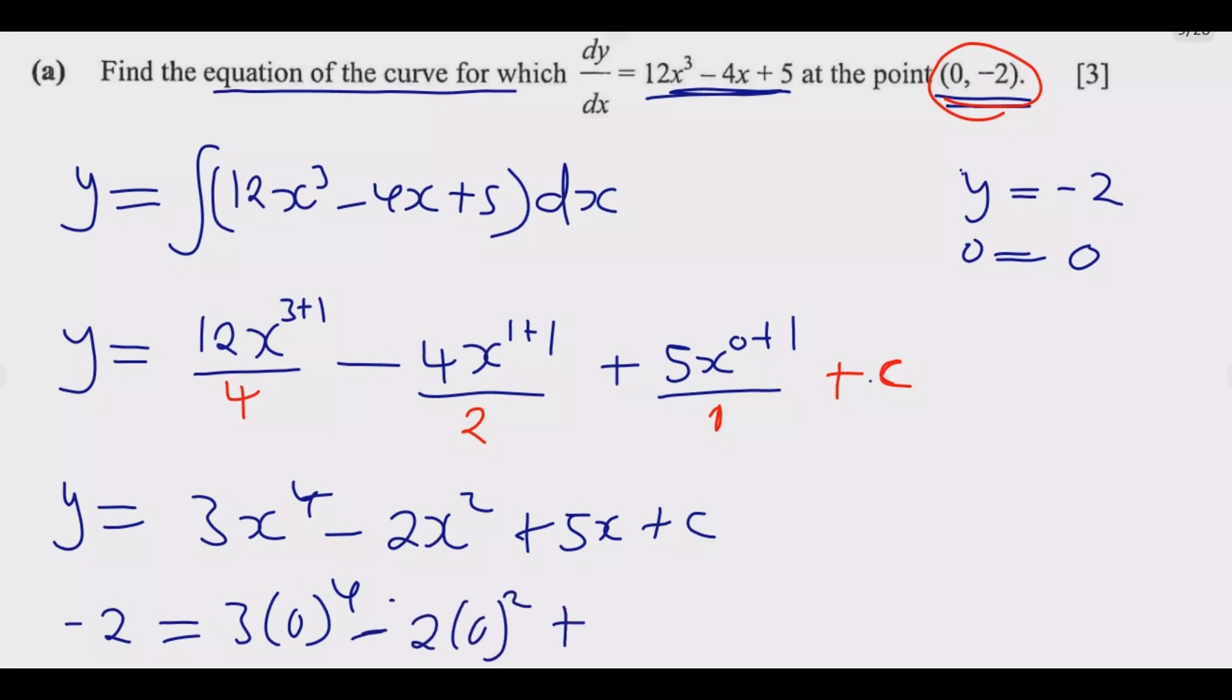What you notice is this is 0, this is 0, and this is 0 because 0⁴ times 3 is 0, then 0² times 2 is 0, then 5 times 0 is 0. Hence from here we can tell now that -2 equals C. That's what it means.